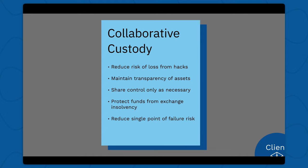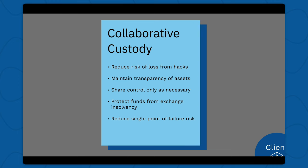Collaborative custody also allows us to maintain transparency of assets. You can always verify the balances of your wallet because you control your wallet and your keys — you can load them up into an external coordinator like Caravan or Sparrow. You can also share control only as necessary. In our default vaults where you hold two of the keys, you're not trusting us for anything except really recoveries. You have full control. And there's no risk of us going insolvent and losing your funds — we're just a partner in this custody.